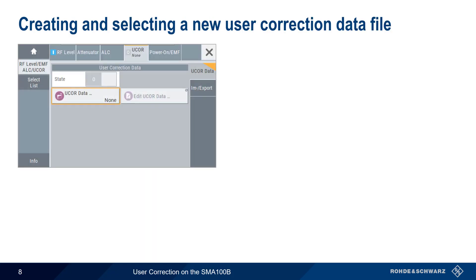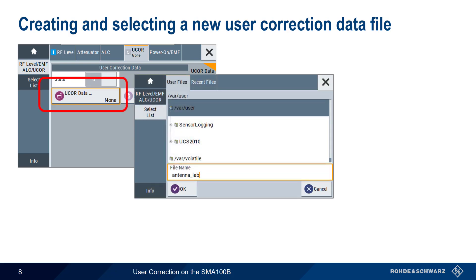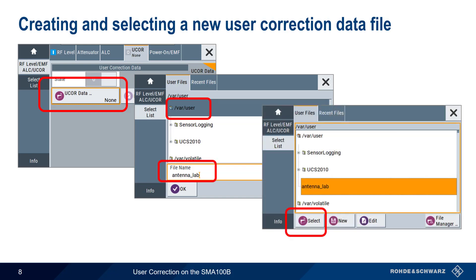The first step in creating user correction data is creating a new empty user correction data file. Click on U-Core Data and choose a path and file name for the user correction data file. After creating the file, highlight and select it before returning to the User Correction menu.